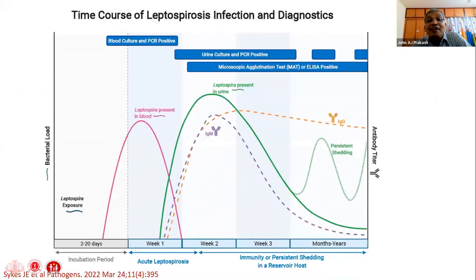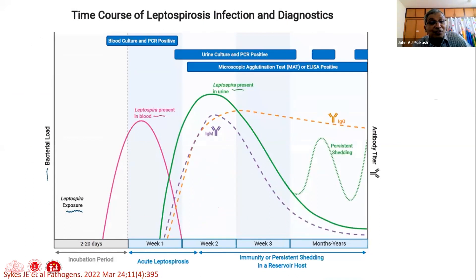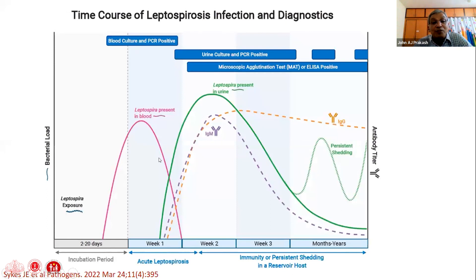This is a recent diagram from the journal Pathogens which gives a nice overview of the time course of leptospirosis and diagnostics. The incubation period can vary from 2 to 20 days. Leptospiremia occurs in the first week, followed by leptospiruria. Initially, blood cultures and PCRs are positive, with plasma being the best sample, then there is intermittent shedding, and in the second week onwards the immune response kicks in.